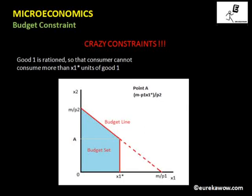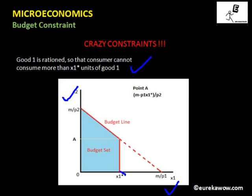In this lecture we are going to talk about crazy constraints — various budget constraints. In the first case, good one is rationed so the consumer cannot consume more than x1 star units of good one. Originally the budget line had a horizontal intercept of m by p1 and a vertical intercept of m by p2.